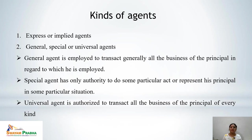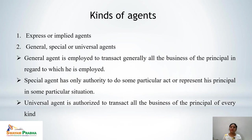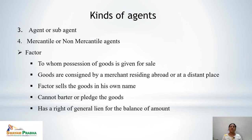Next are general, special, and universal agents. A general agent is employed to transact all business of the principal in the particular type of business for which he is employed. A special agent has authority to do only some particular act or represent the principal in particular situations. A universal agent is authorized to transact all business of the principal of every kind — the broadest scope of authority.